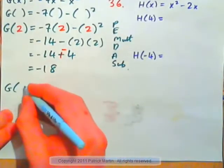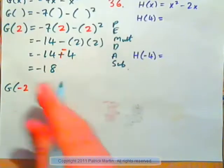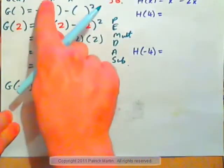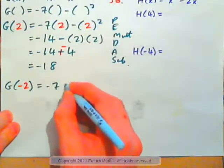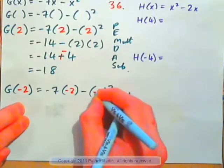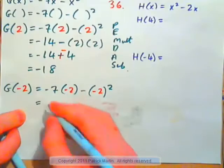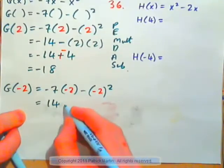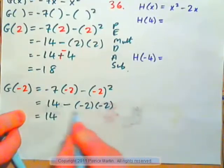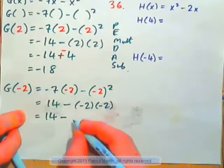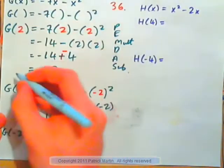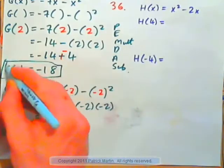Let's see if you can calculate g of negative 2. g of x is negative 7x minus x squared, so g of anything is negative 7 times the input minus the input squared. The input is negative 2, so we put negative 2 here and here. Negative 7 times negative 2 is positive 14. We write down the subtract sign and apply the exponent: negative 2 times negative 2 gives positive 4. So, the whole thing is 14 minus 4, which is positive 10. So, g of negative 2 is positive 10, where g of positive 2 was negative 18.